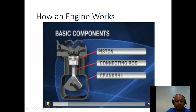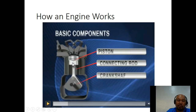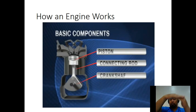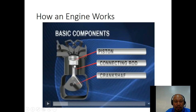Let me point out the parts. This is the piston — it moves up and down. The piston is connected to the crankshaft via a connecting rod. The reciprocating up-and-down motion of the piston is converted into rotary motion at the crankshaft by virtue of this connecting rod. All internal combustion engines — and even external combustion engines — have a piston, a connecting rod, and a crankshaft, regardless of fuel type or cycle type.